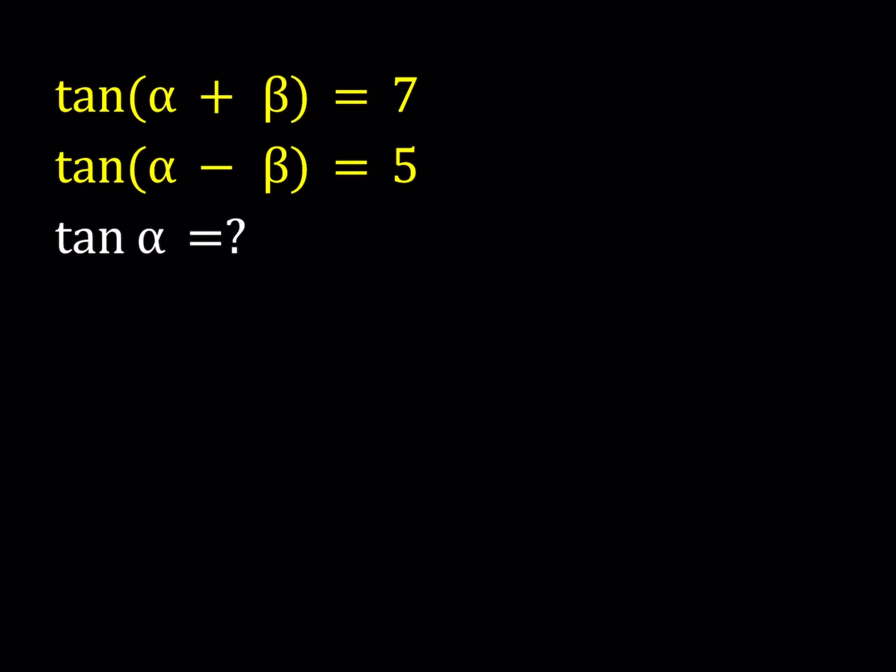Hello everyone. In this video we're going to be solving a trigonometry problem. We have tangent of alpha plus beta equals 7 and tangent of alpha minus beta equals 5, and we're supposed to find tangent alpha. I'm going to be presenting two different methods here. Let's start with the first method.